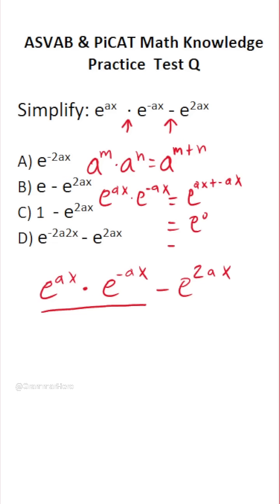You also have to know that anything raised to the zero power is always going to be one. So for example, five to the zero power would be one, 100 to the zero power is going to be one, and likewise e to the zero power is one.